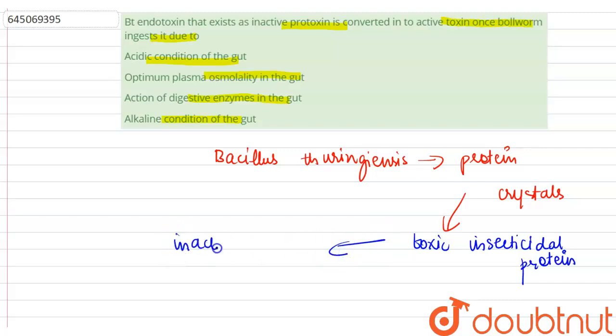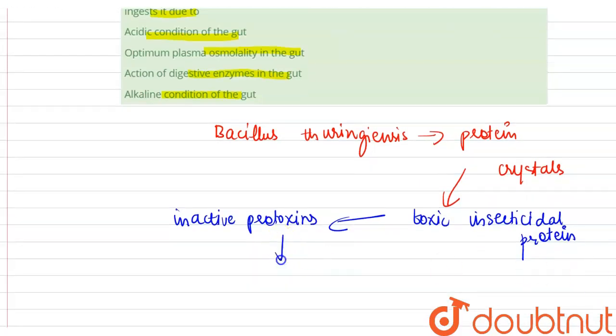But once an insect, or we can say once a bollworm, once a bollworm insect ingests the inactive toxin, it is converted into active form of toxin.